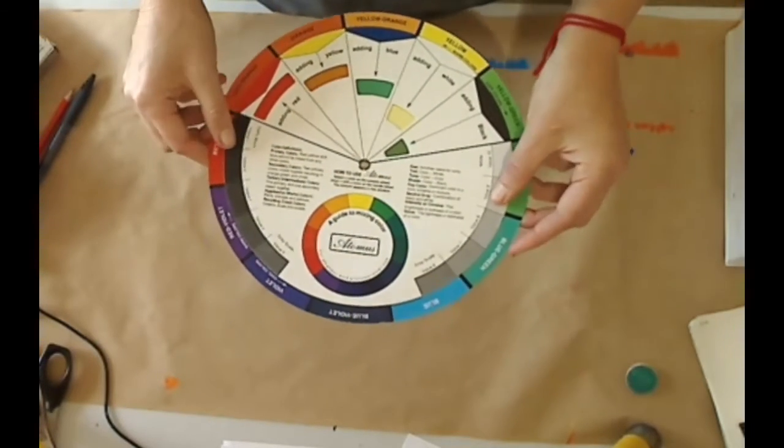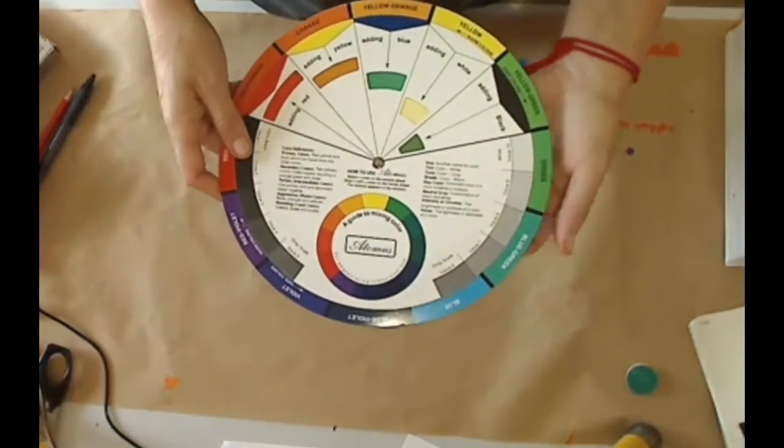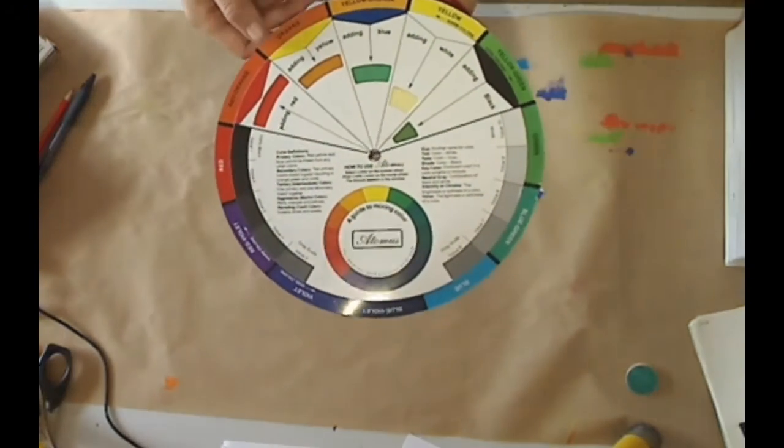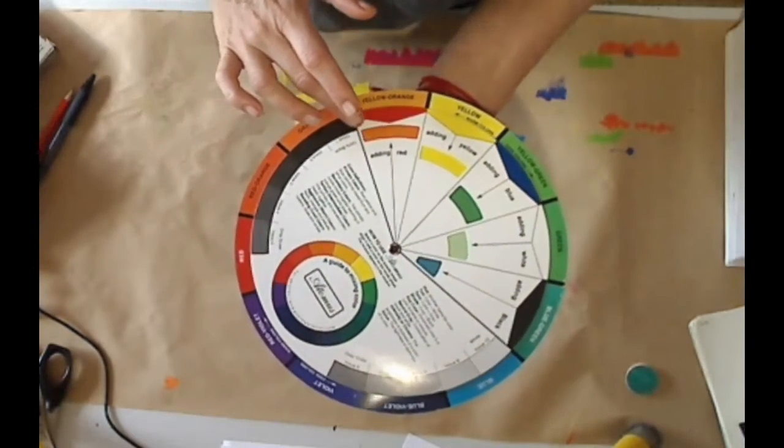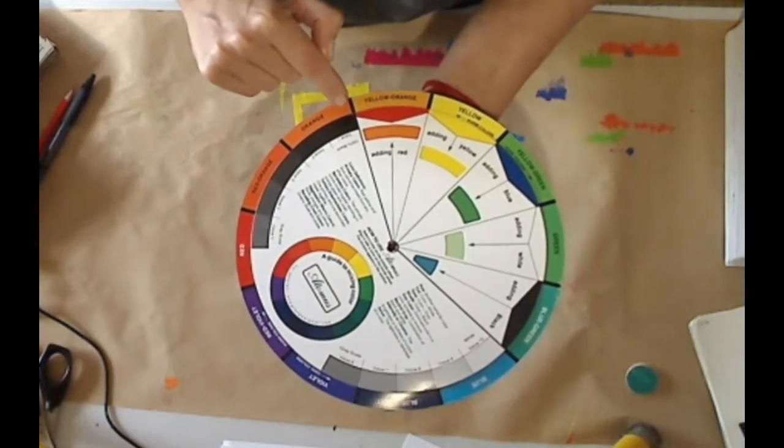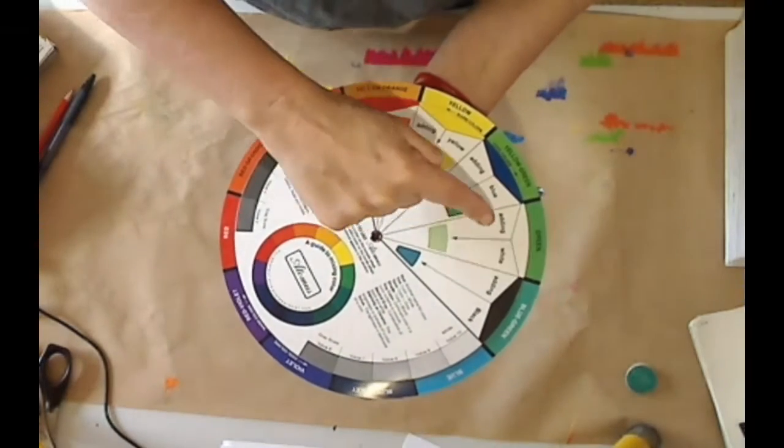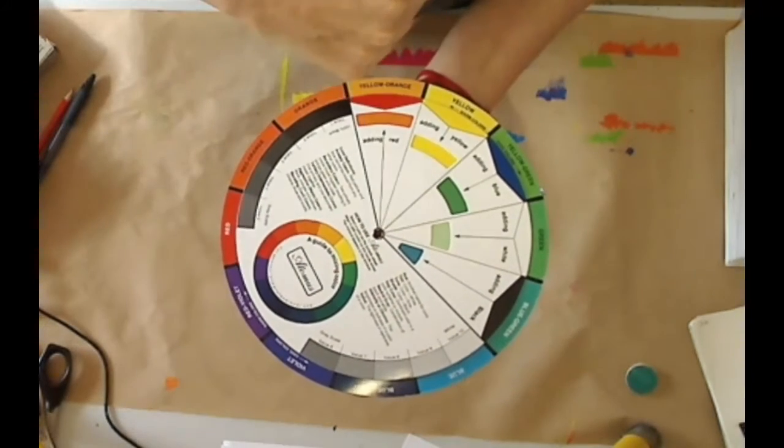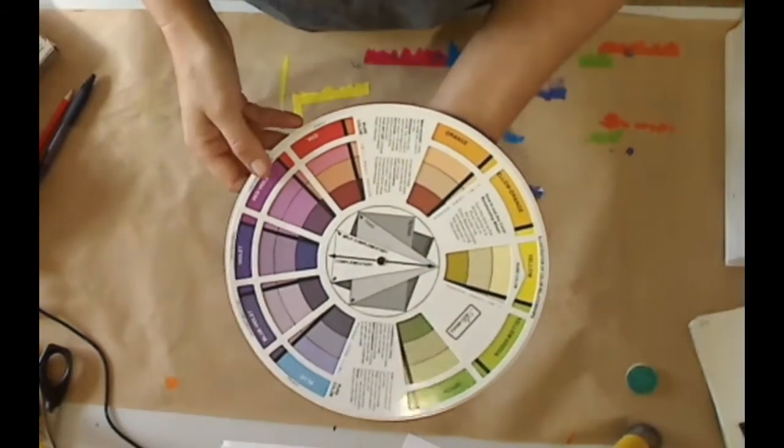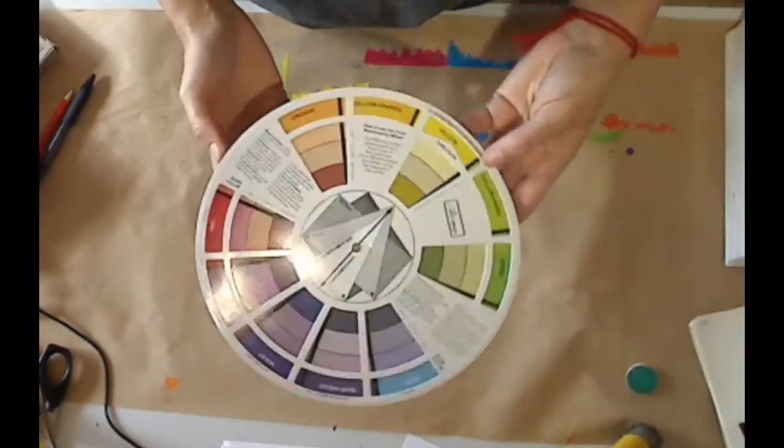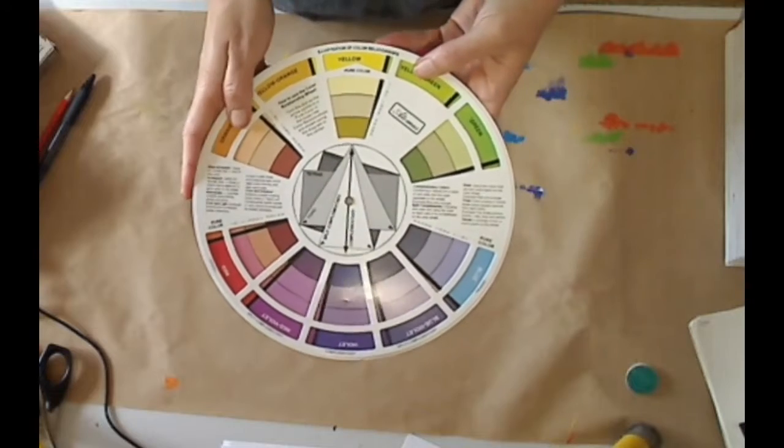You can purchase them at art supply shops or probably online. On this side, you can move along and see how the hue looks if you add primary colors or white or black to a hue. The reverse side will show you color relationships or color schemes.